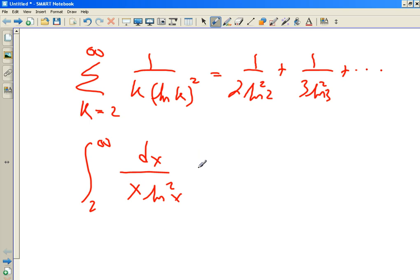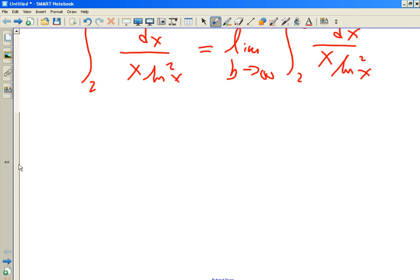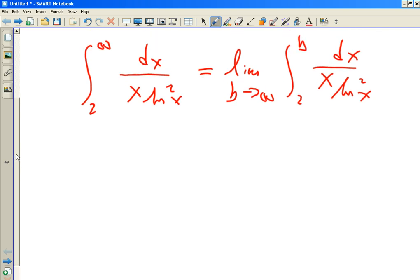Well, it can be shown that the improper integral that you get by converting this to a function. Are you ready? 1 over x ln x squared. I can't write. 1 over x ln x squared dx, right? What did I do? I took the discrete variable k and replaced it with the continuous variable x. And now I make it an improper integral from 2 to infinity.